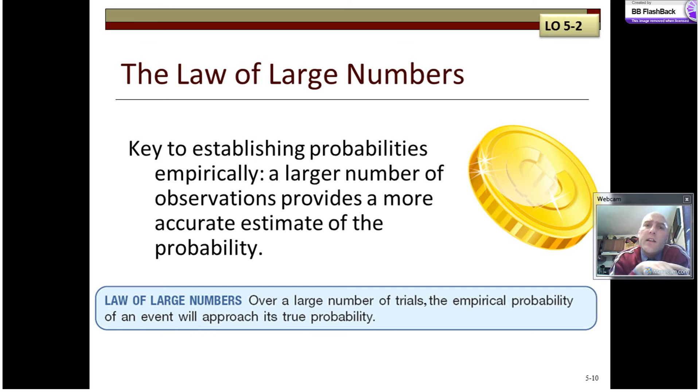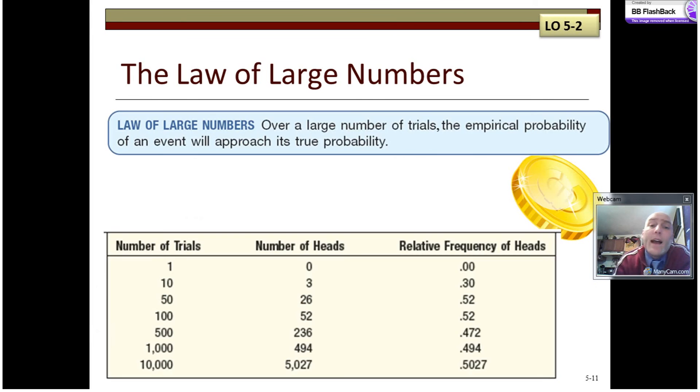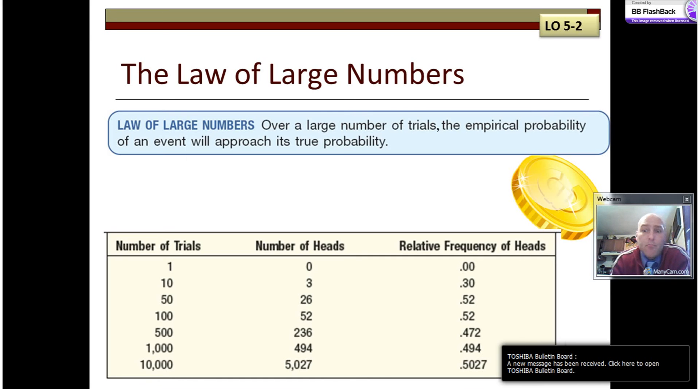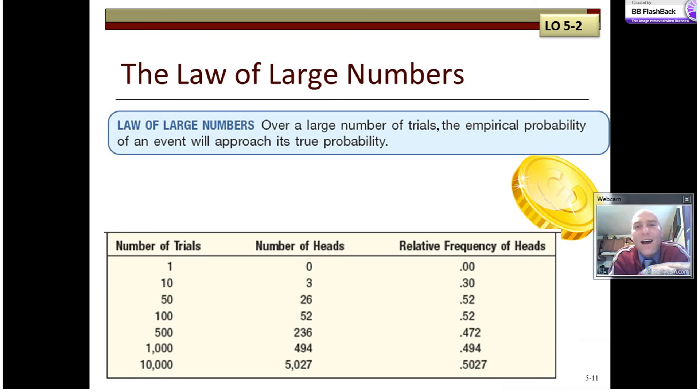I mentioned earlier that the law of large numbers is key to establishing probabilities empirically. A large number of observations will provide a more accurate estimate than a small number of observations. So we might have this occurrence. Let's say the number of trials is over there on the left hand side, and we're flipping a coin. And when we flip this coin, we want to count the number of times heads should occur.